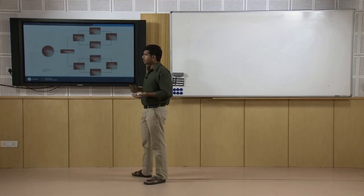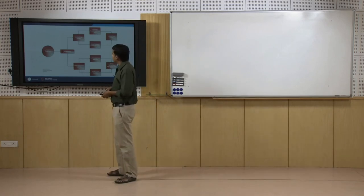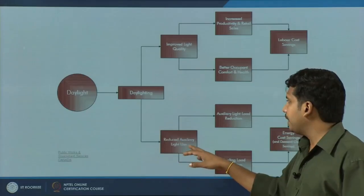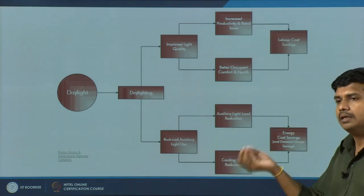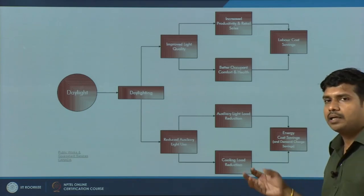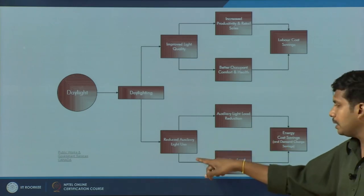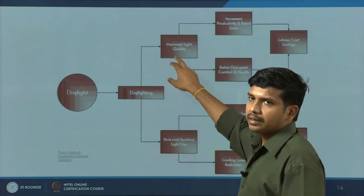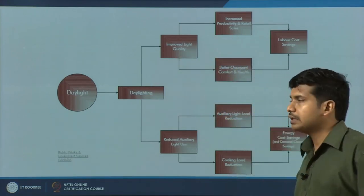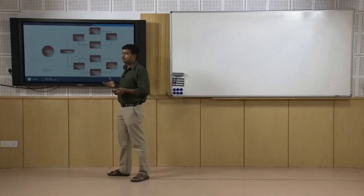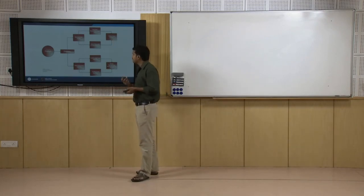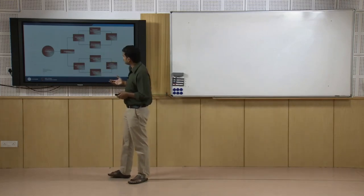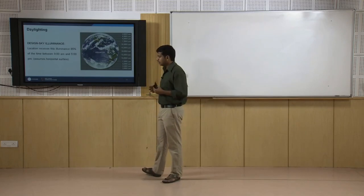As we know, daylight is very important. A study done in Canada identified two key benefits of daylight. First, it directly reduces the plug load — the electricity consumption for artificial lighting. Second, it reduces heat generated from lighting, thereby reducing the cooling load. Both contribute to considerable cost savings. Apart from these, the study found that daylight improved space quality, worker productivity, saleability of products, and health and comfort indoors, resulting in better labor cost savings and increased sales.